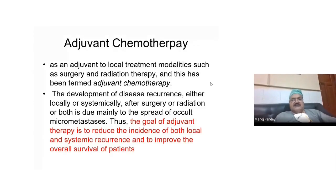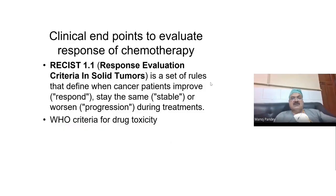Adjuvant chemotherapy is given after the primary treatment is over, and is given to reduce disease recurrences — whether local or systemic — and it basically improves the overall survival of the patient. Neoadjuvant chemotherapy in most instances does not improve survival, but adjuvant chemotherapy in most instances does improve survival.